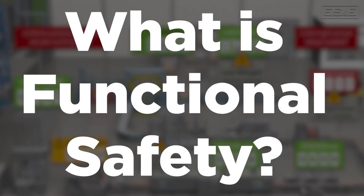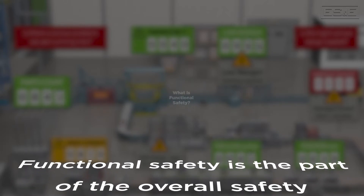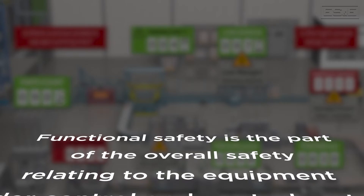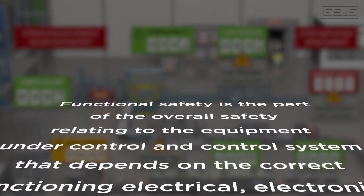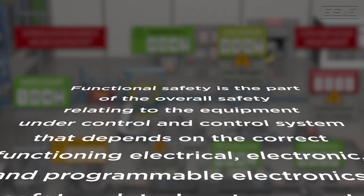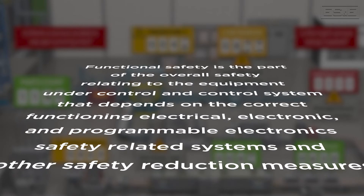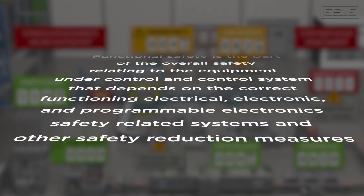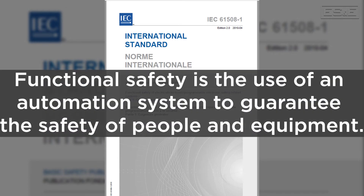What is functional safety? The formal definition of functional safety is the part of an overall safety relating to the equipment under control and control system that depends on the correct functioning electrical, electronic, and programmable electronics safety-related systems and other safety reduction measures. That definition comes from the standard IEC 61508, but a more practical definition would be to say functional safety is the use of an automation system to guarantee the safety of people and equipment.